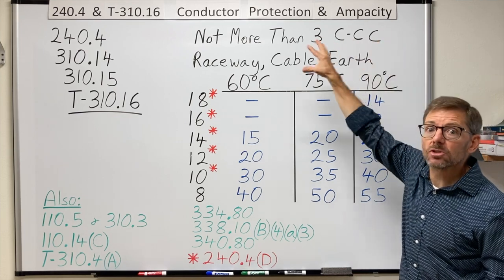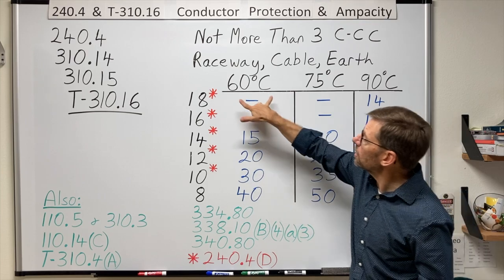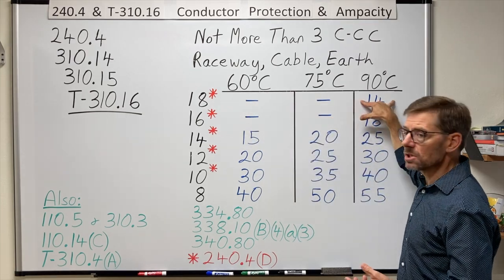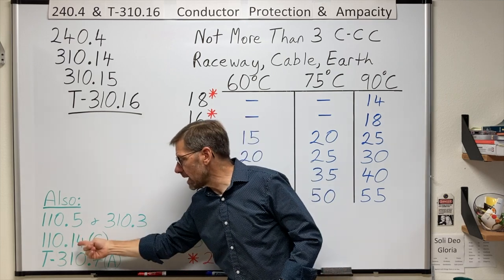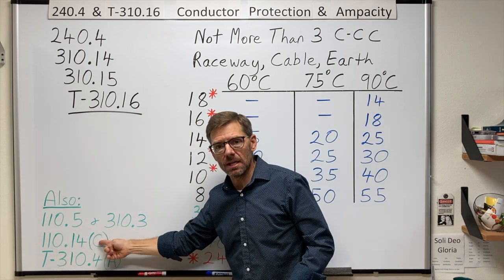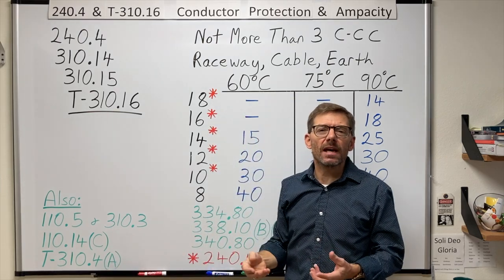We'll get into the insulation types in a little bit. But to understand these temperature columns, again, we've got to go back to the beginning of the code, article 110.14c. That's easier to understand if I draw a picture.